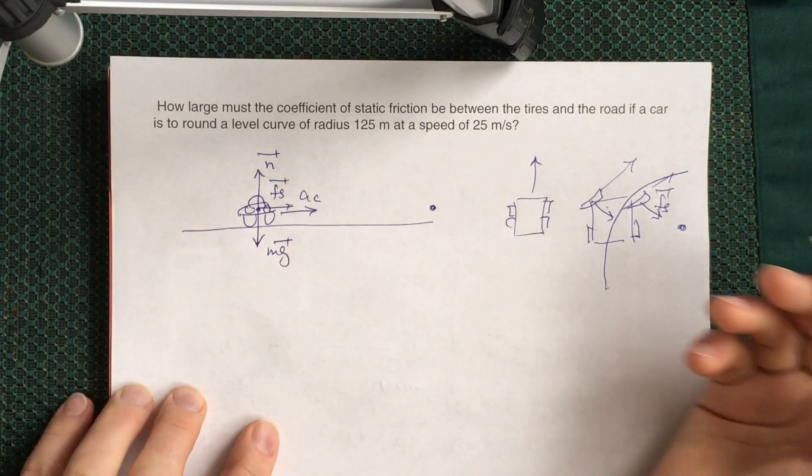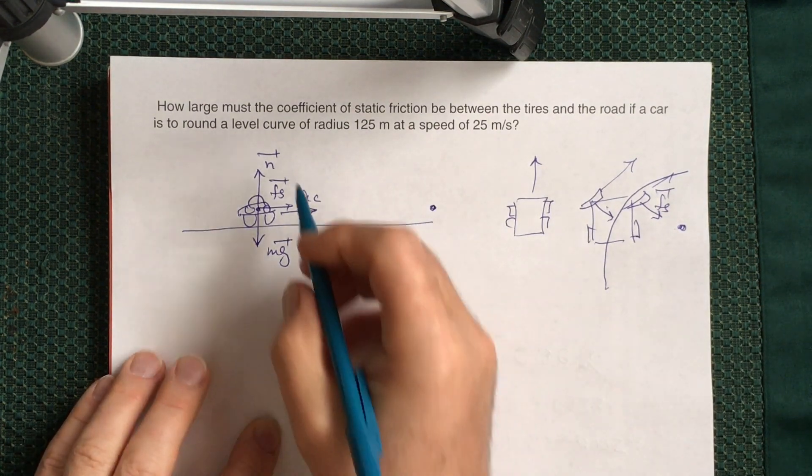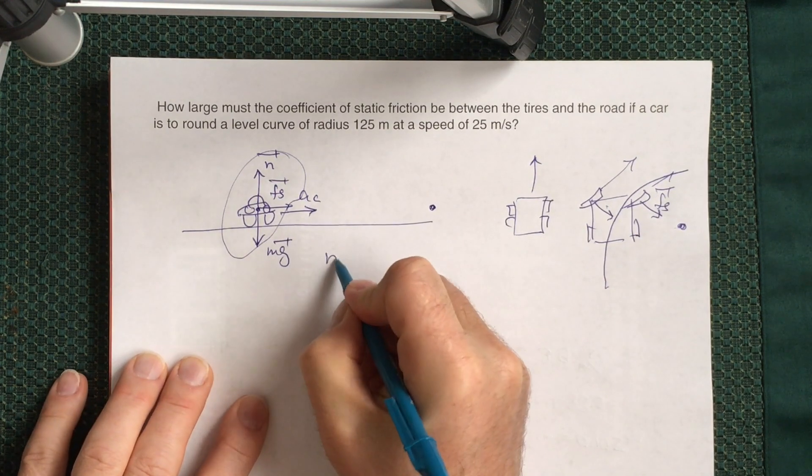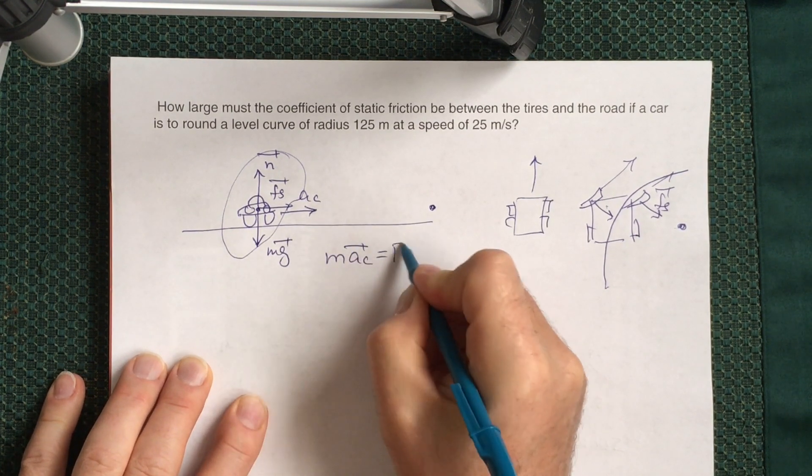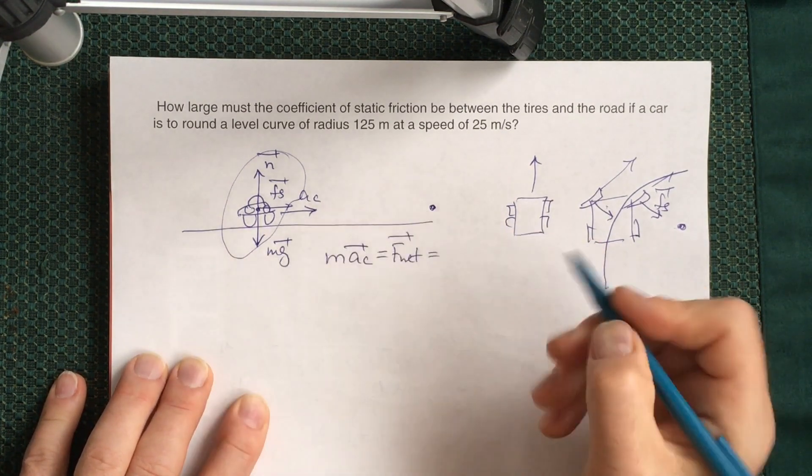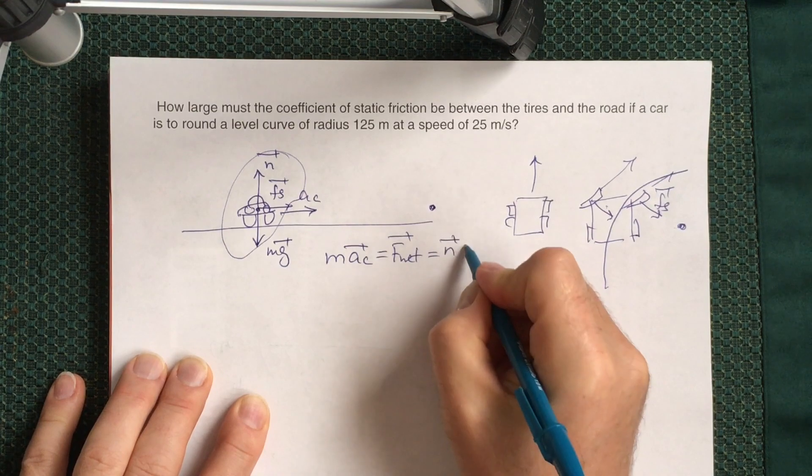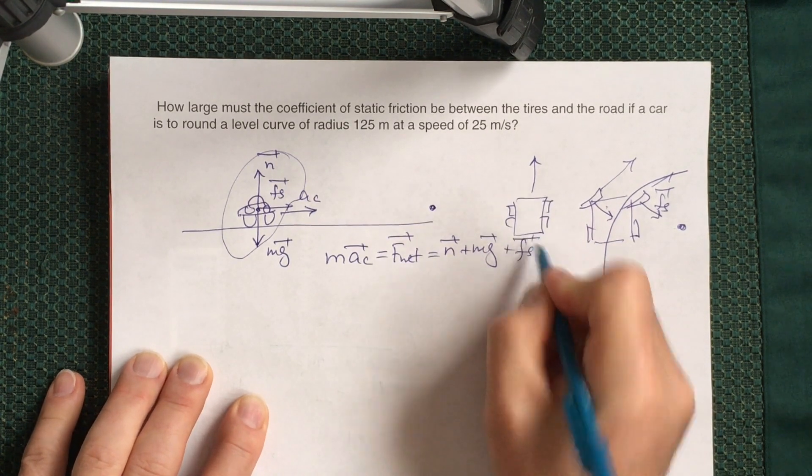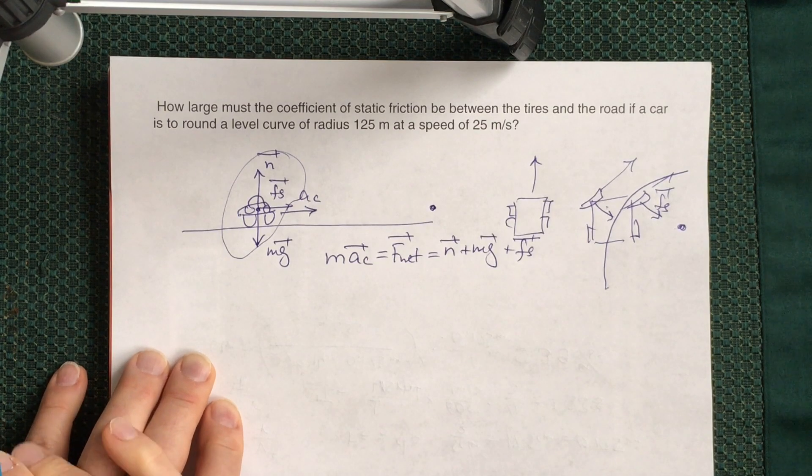So then after you figure that out, after you have the free body diagram, you have to write Newton's second law: mass times centripetal acceleration equals net force acting on the car. In our case, net force is the sum of all forces. So this is N plus mg plus static friction force. Now this is the only vector equation you have.